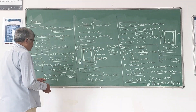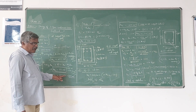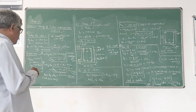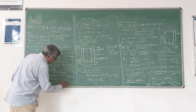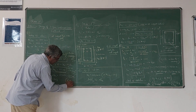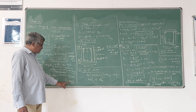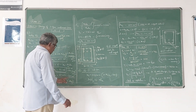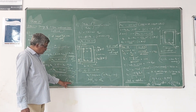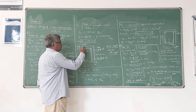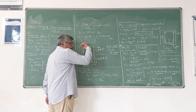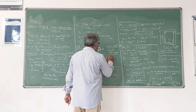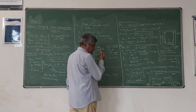Since it is a negative bending moment, tension occurs at the top and compression occurs at the bottom. We have to provide this steel at the top. We can provide 6 bars of 20 mm diameter: 6 × (π/4) × 20² is slightly more than the required area. So 6 numbers of 20 mm diameter bars are provided at the top as the main tension steel, because the section is subjected to negative bending moment.